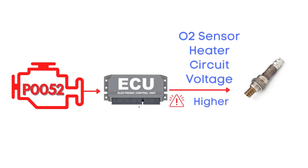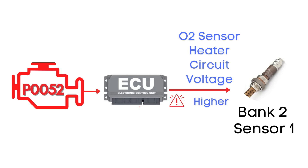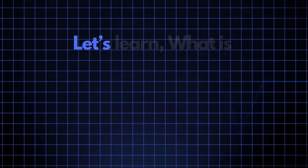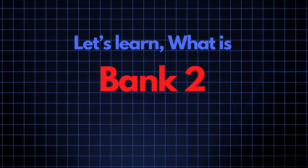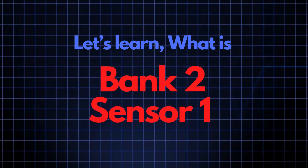Specifically, we're talking about the oxygen sensor heater circuit for bank 2, sensor 1. Now let's learn what bank 2, sensor 1 means.